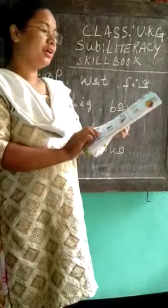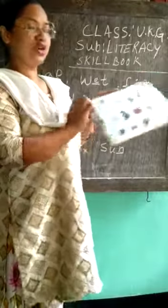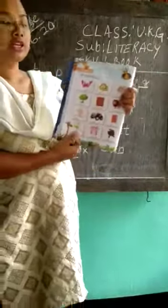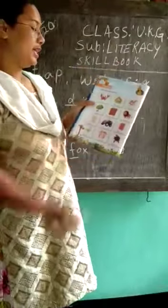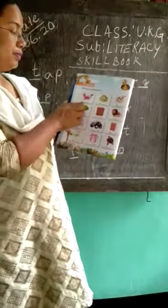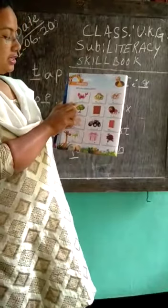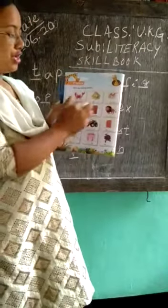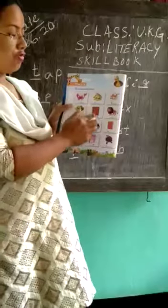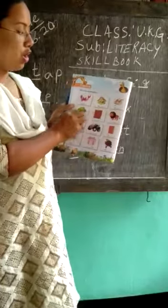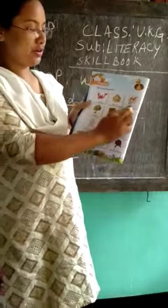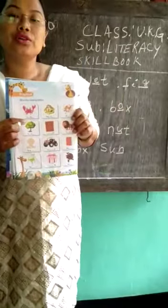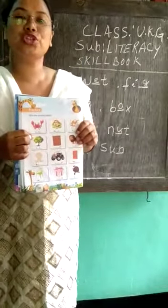Turn to the next page, page number 20. Here it is also the same — fill in the missing letters. The first one — one, two, three, four, five, six — so fill in the missing letters for only these six pictures. You do it yourself and please show it to me.